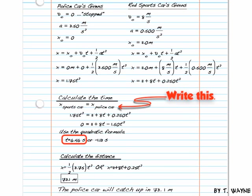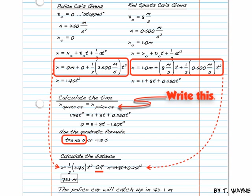But I still haven't gotten to the question. I have to calculate the distance. So I have a choice. I have two equations I can use. I've described the distance for the police car and for the sports car, and I can use either one. It doesn't matter which one. So I'm going to choose the short one.